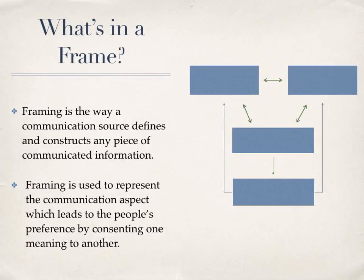What's in a frame? Framing is the way a communication source defines and constructs any piece of communicated information. It is used to represent the communication aspect which leads to the people's preference by consenting one meaning to another. The graph represents the effects of a message when it is being conveyed.